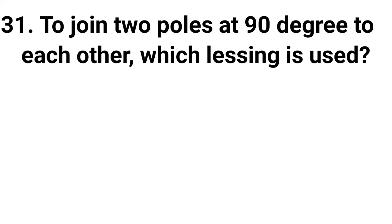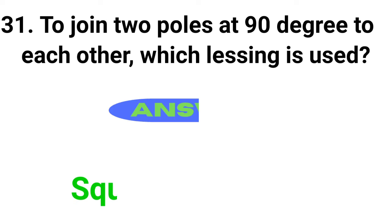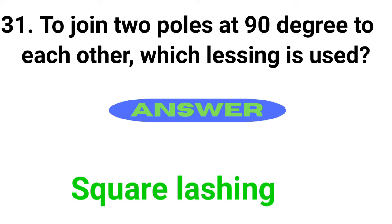Question 31: To join two poles at 90 degrees to each other, which lashing is used? Answer is square lashing.